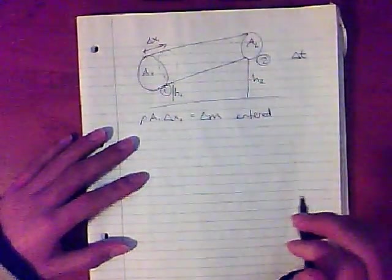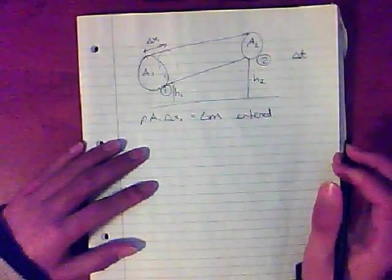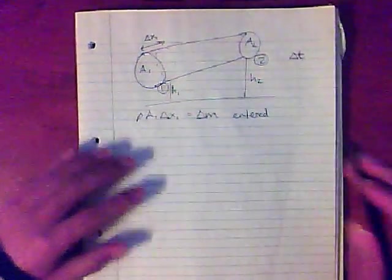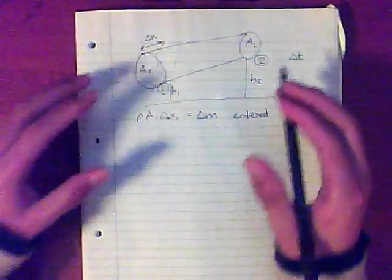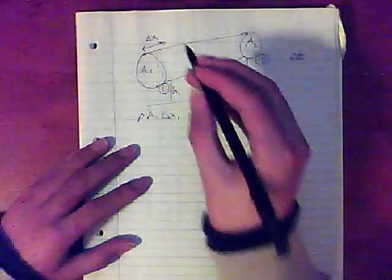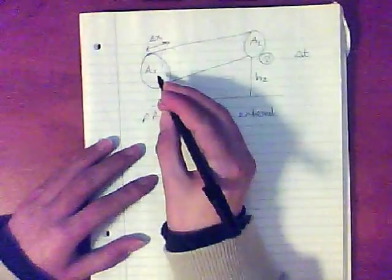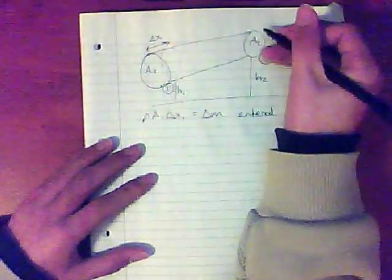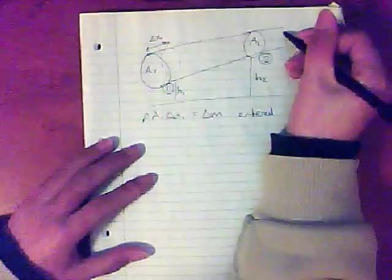Now, water is incompressible, or we'll assume it to be incompressible. And that means, in a given volume, you can only have so much water in it. You can't squeeze water in a volume. So, how much volume has went in the pipe, the same amount of volume must have went out the pipe as well.